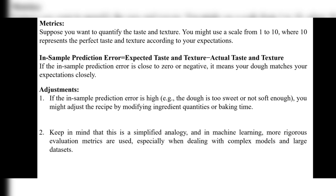Now you understand about in-sample prediction error. If the in-sample prediction error is high — for example, the dough is too sweet or not soft enough — you have bad texture and bad taste, and the prediction error will be high. In that case, you might adjust the recipe by modifying ingredient quantities or baking time. Keep in mind this is a simplified analogy — in machine learning, more rigorous evaluation metrics are used, especially when dealing with complex models and large datasets.